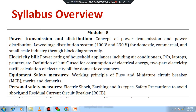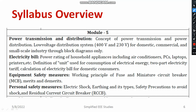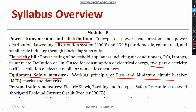Regarding module 5, it comprises four segments. The first is power transmission and distribution — the single line diagram of power generation, transmission and distribution. The second covers power ratings of appliances and two-part tariff. The third covers the importance and use of MCB. The fourth covers precautions to avoid electric shock and what is RCC.